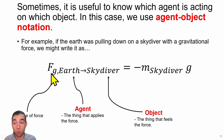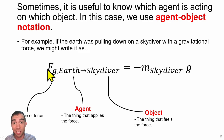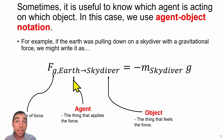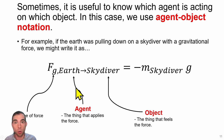We put the type of force as a subscript next to the letter F, and then we label the agent that is doing the force — the thing applying the force on our system.